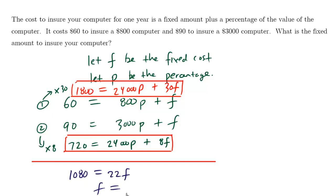Divide both sides by 22. 1,080 divided by 22 equals approximately $49.09. So the fixed cost is $49.09.